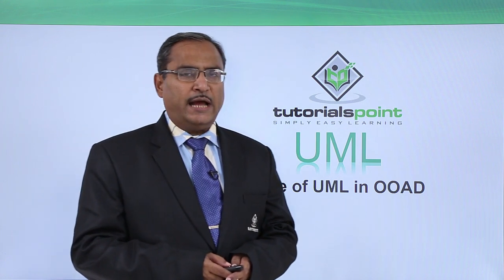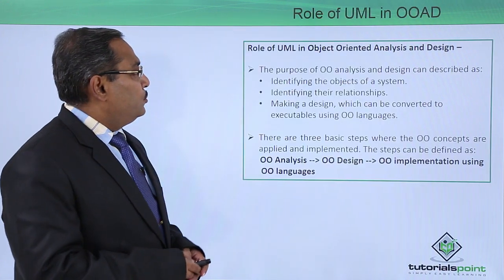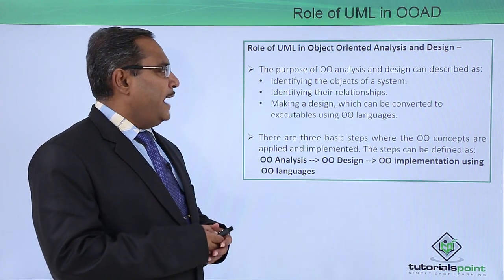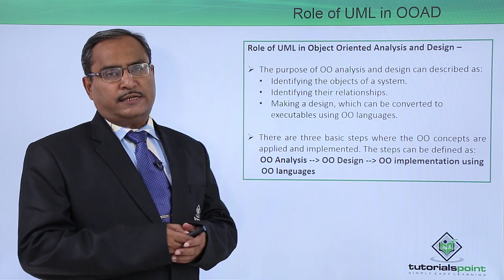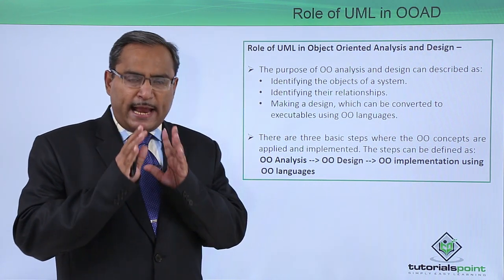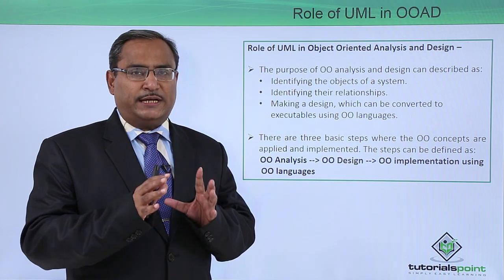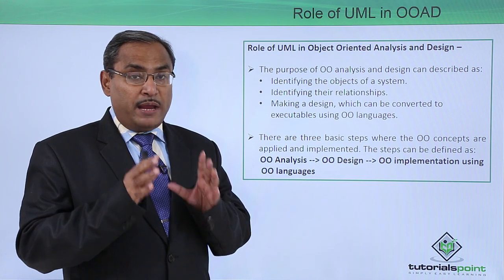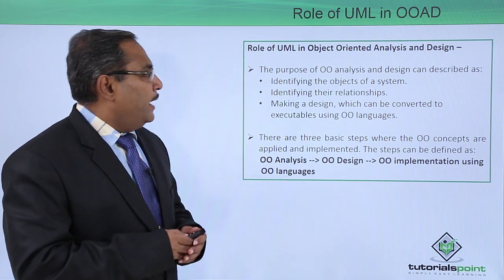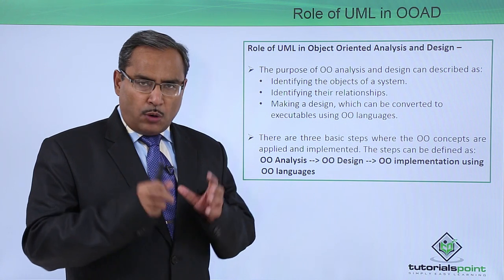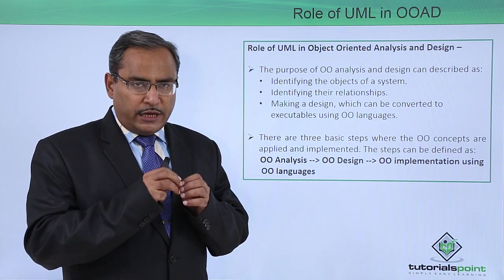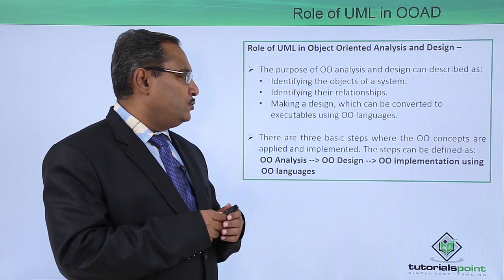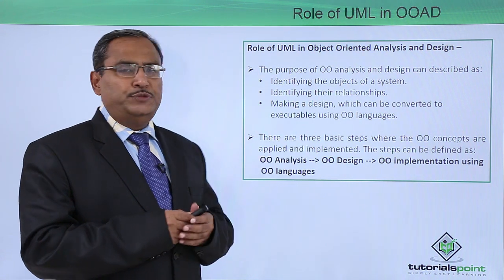The purpose of object-oriented analysis and design can be described as identifying the objects of a system. Objects are the main entities of the system, and how they are behaving and interacting with each other is the main point of concern. This includes identifying their relationships and how those relationships are built between objects, making a design which can be converted to executables using an object-oriented language.